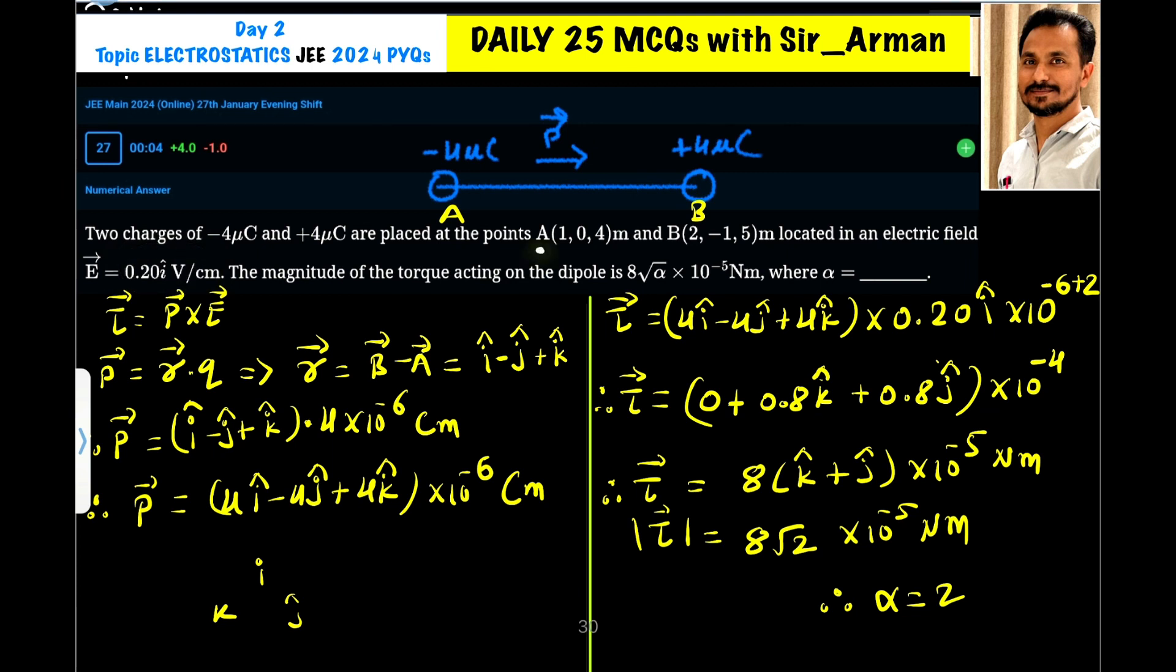Here are the coordinates of the first charge, the negative charge, and these are the coordinates of the second charge, the positive charge. The electric field is along the I direction only, that is along X direction, which is 0.20 into 10 raised to 2 volt per meter because here it is centimeter.